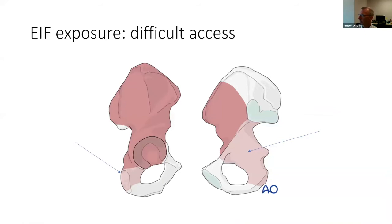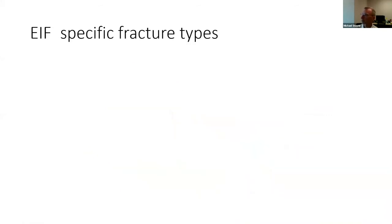The difficult areas for exposure are the caudal aspect posteriorly near the ischial tuberosity, which I see better through a traditional Kocher-Langenbeck approach, and digital palpation along the quadrilateral surface in the lateral position.